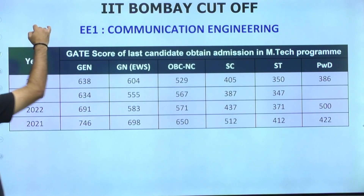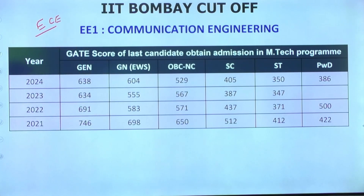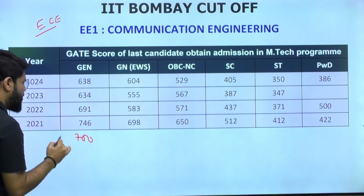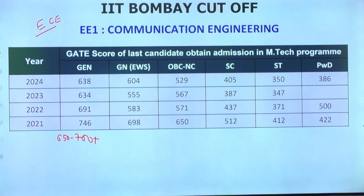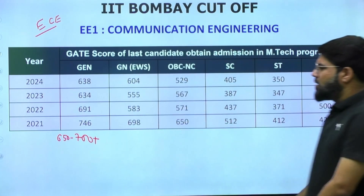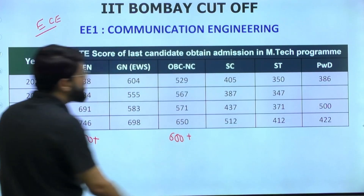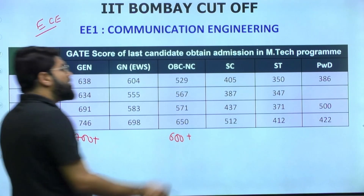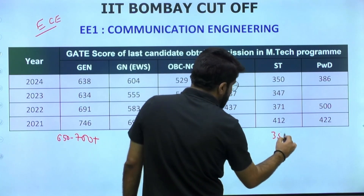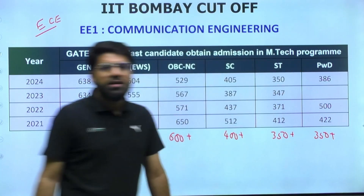For EC students, Communication Engineering is the recommended cross-over specialization. A score of 650–700+ in general gives a good chance of admission. For OBC Non-Creamy Layer, 600+ is a safe call. SC: 400+; ST: 350+; PWD: 350+ is a reasonable benchmark for Communication Engineering at IIT Bombay.